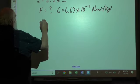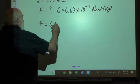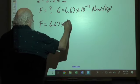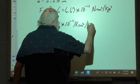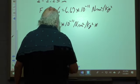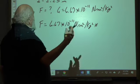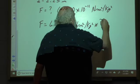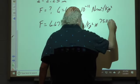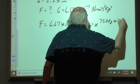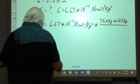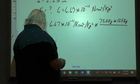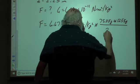So the final force: G, 6.67 times 10 to the negative 11 newton meter squared per kilogram squared, times the product of the two masses, 75 kilograms times 125 kilograms, divided by the distance between the two squared. That distance we said was 2.25 meters.